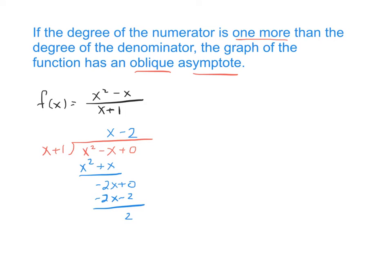Now for the oblique asymptote, we only look at the quotient. We don't care about the remainder. So the oblique asymptote for this function is y equals x minus 2.